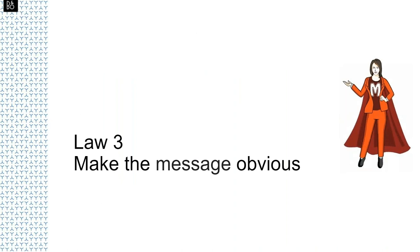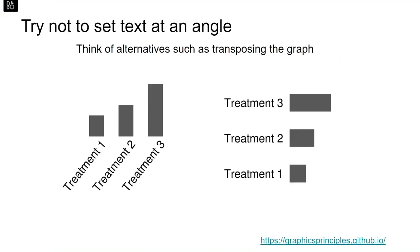Law three: make the message obvious. A key aspect of this law is to assume that the reader will not understand what messages or information you're trying to convey — you have to really work at it. A simple illustration is to try not to set text at an angle. Think of alternatives such as transposing the graph. The left-hand plot essentially asks the reader to tilt their head to read the text. A simple transposing of the graph allows us to resolve this issue and also introduces a more effective visualisation.